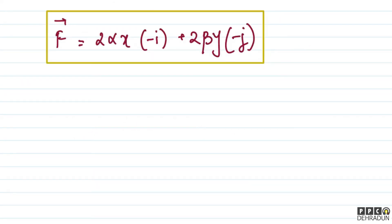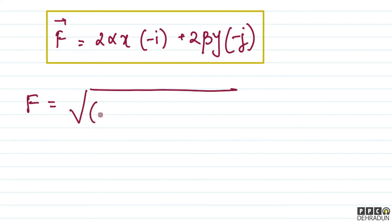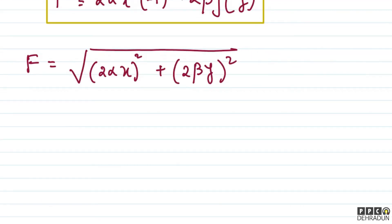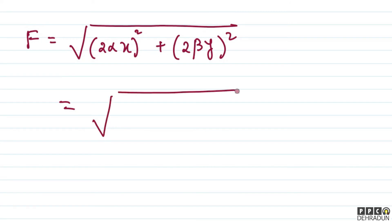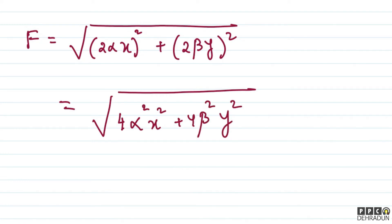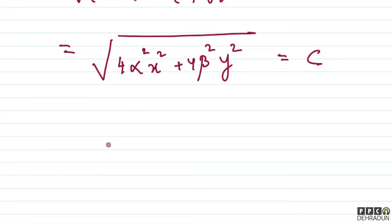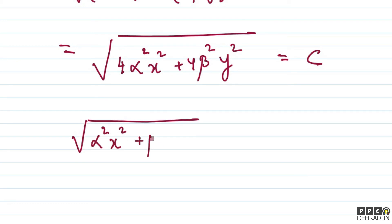Now for part B: the shape of surfaces where |F| = constant. The magnitude of F is: |F| = √((2αx)² + (2βy)²) = √(4α²x² + 4β²y²). Setting this equal to constant C, we get α²x² + β²y² equal to C²/4.